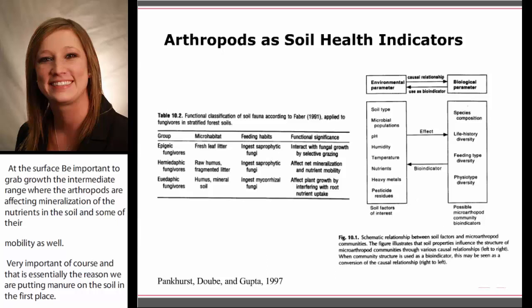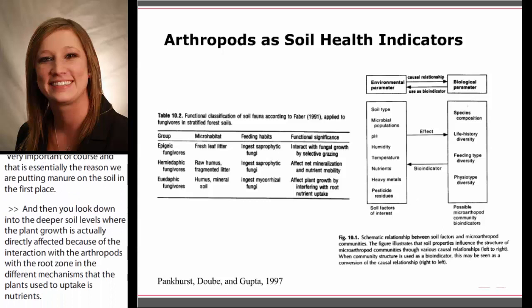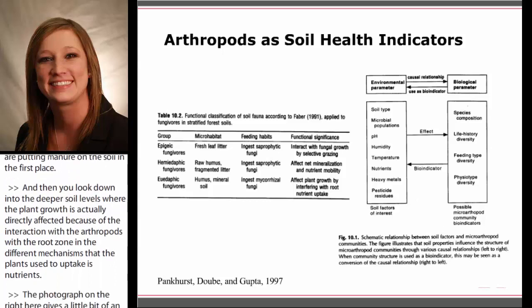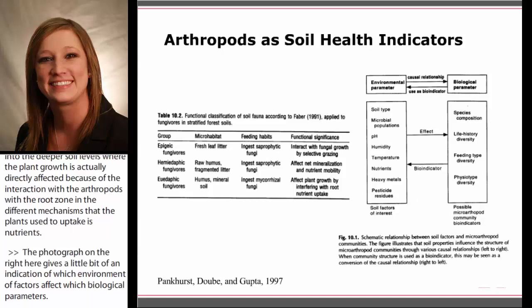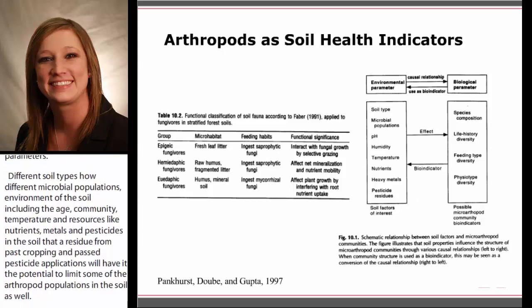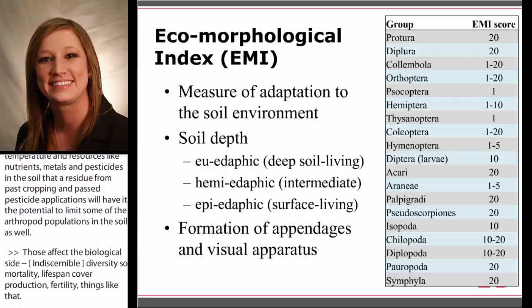This graph on the right gives an indication of which environmental factors affect which biological parameters. Different soil types, microbial populations, soil environment including pH, humidity, and temperature, food sources like nutrients and different metals, and pesticide residues from past cropping and applications all have the potential to limit arthropod populations in the soil. On the biological side, these affect the different species found, life history diversity such as mortality, lifespan, reproduction, and fertility, and the different types of food sources that each arthropod would focus on as primary in a specific environment.